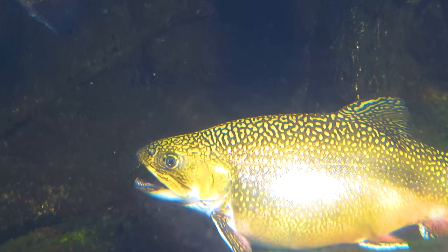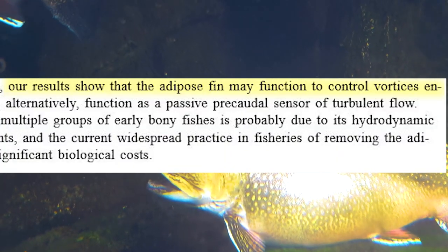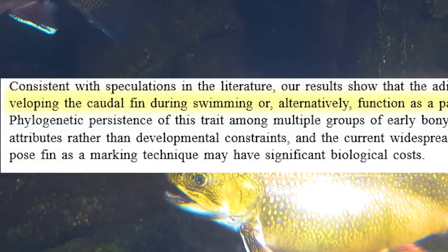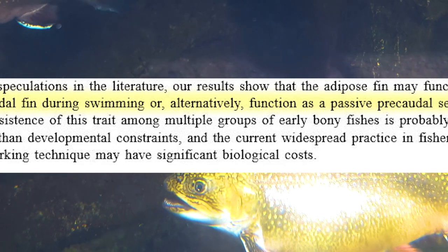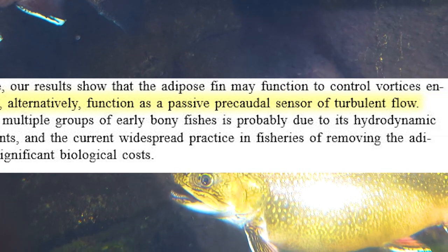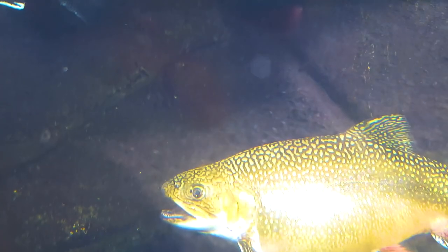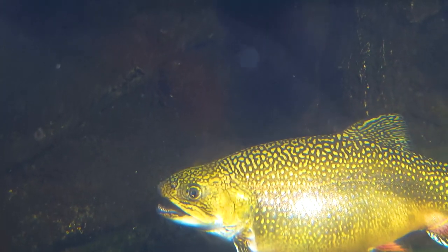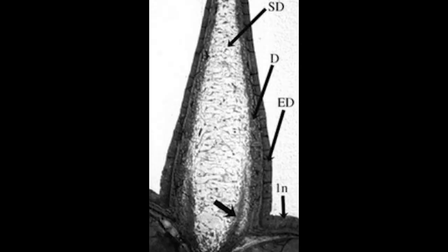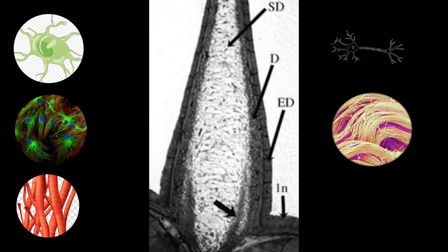The results of this experiment show that the adipose fin may function to control vortices enveloping the caudal fin during swimming, or alternatively, function as a passive pre-caudal sensor to turbulent flow. In layman's terms, the adipose fin is believed to act as a sensor for the caudal fin. Given the fin's composition, it seems likely that the nerves found in the subdermal layer could help the trout sense and adjust its caudal fin to turbulent flows, in turn leading to improved swimming performance.